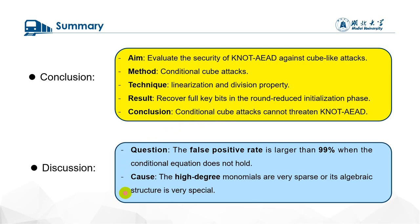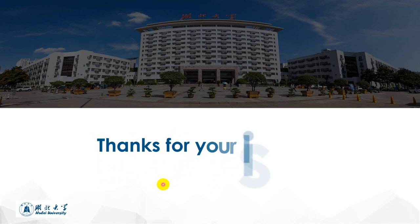In addition, we found that the false positive rate is larger than 99% when the conditional equation does not hold. We guessed the reason is that the higher degree monomials are very sparse in the output state. While its algebraic structure is very special, it is worthy of further discussion and study. That is all my report. Thank you.